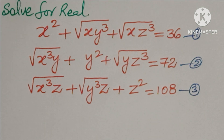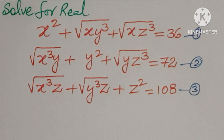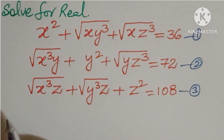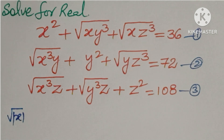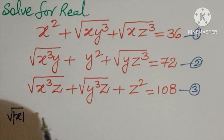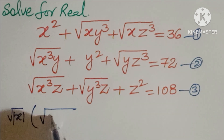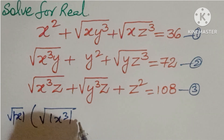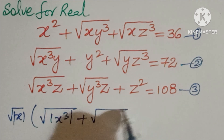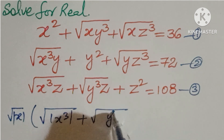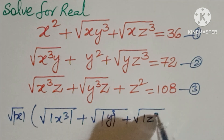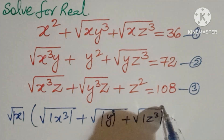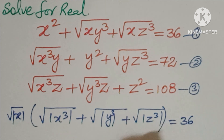If you observe, you can take √x common. In the first equation, taking √x common, you will get: √(|x|³) + √(|y|³) + √(|z|³) = 36.